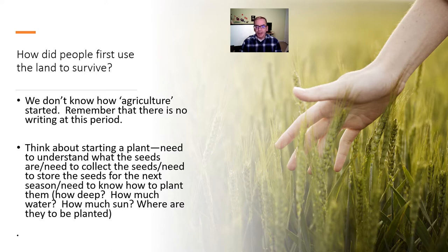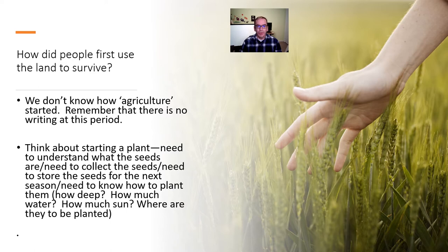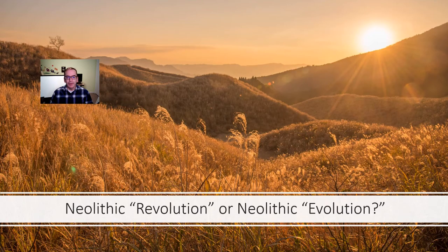One thing that's really useful to start thinking about is what is the process of growing plants. Think about what a plant is — you need to collect the seeds. You need to know that the plant you're harvesting and eating, you need to collect some of it and store it for next year. You need to know how to plant them: how deep in the soil, how much water it needs, how much sun, where they're going to be planted. There are lots of things these early humans had to think about in terms of planting crops for the first time.